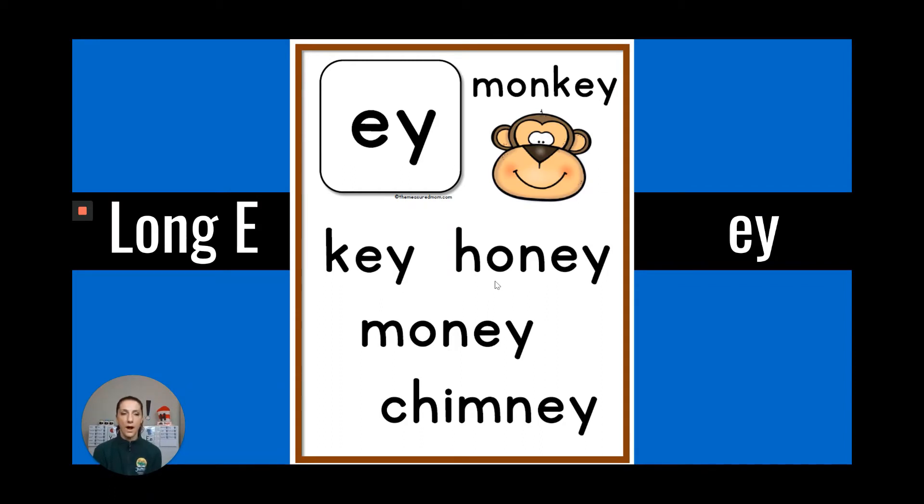Then we have E-Y, as in monkey, key, honey, money, and chimney.